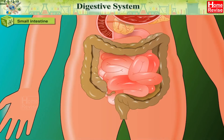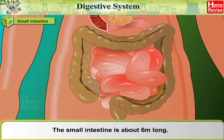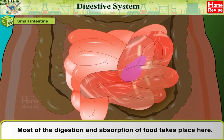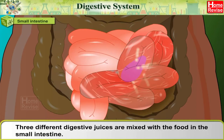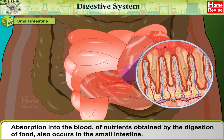Small intestine: The small intestine is about six meters long. Most of the digestion and absorption of food takes place here. Three different digestive juices are mixed with the food in the small intestine, and absorption into the blood of nutrients obtained by the digestion of food also occurs in the small intestine.